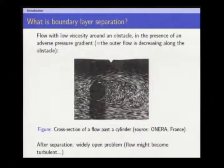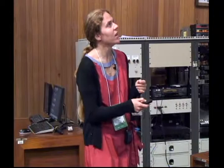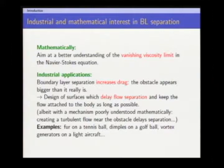The goal will be to explain what are the mechanisms behind separation. So why is that interesting? Mathematically, it falls within the large area of studying the vanishing viscosity limit in the Navier-Stokes equation — the transition from Navier-Stokes to Euler. From an industrial point of view, boundary layer separation is not desirable because it increases drag. The obstacle will appear bigger than it really is, because its shape as seen from the outer flow would be along the lines of separation.